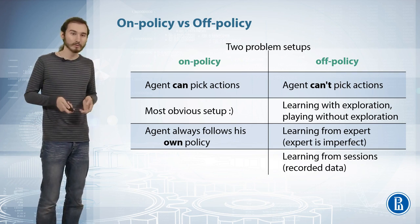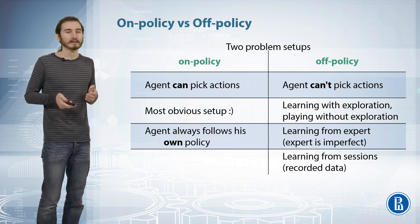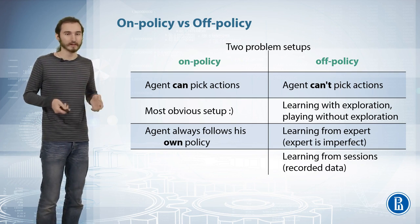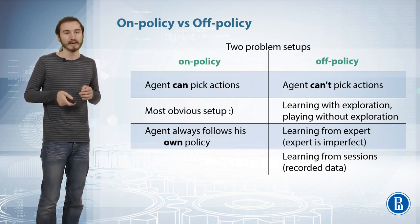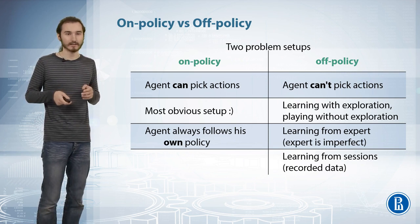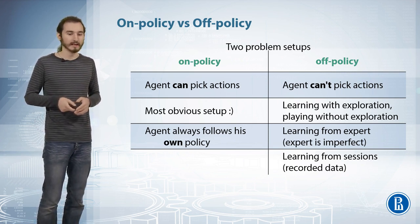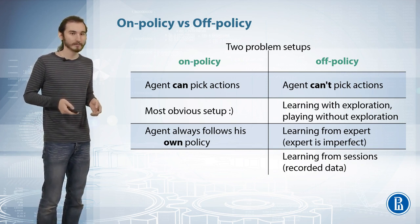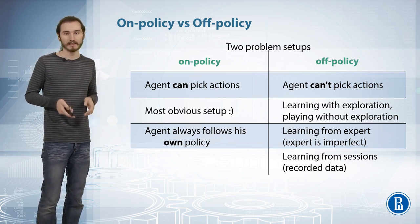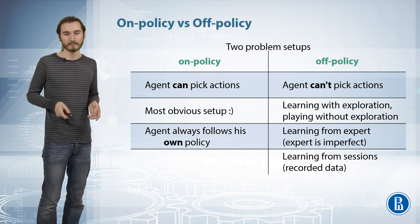And then you want your agent to train not how to behave optimally with this exploration of large epsilon, but how to find an optimal policy when it's always asked to pick an optimal action. So basically it first trains with this epsilon-based or maybe Boltzmann-based exploration, and then the exploration goes away and it gets to pick optimal actions all the time.